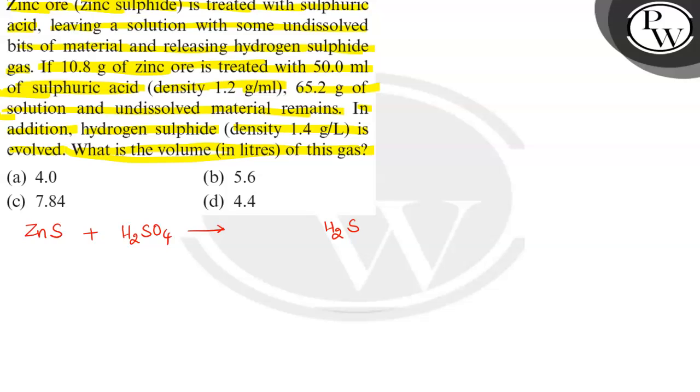What happens when it reacts? It converts into H2S. H2S gas is released. In undissolved condition, it becomes ZnSO4. This is the reaction. The undissolved bits of material is this, and the gas liberating is H2S gas.